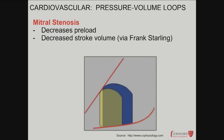Here is an example of mitral stenosis. Stenosis means the valve is thickened and not opening as well. The mitral valve moves blood from the left atrium to the left ventricle. If the mitral valve is not opening as much, what happens to your preload? It goes down. The yellow curve shows the preload going down and stroke volume going down — Frank-Starling, very basic.